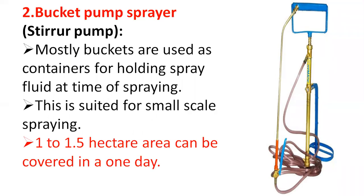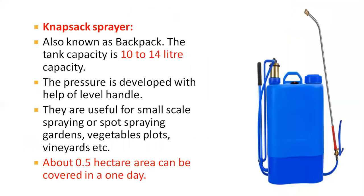Next is the bucket pump sprayer, also called the stirrup pump. This pump is generally used with a bucket container for holding the spray fluid during spraying. The lance is placed inside the container and holds the spray fluid. The bucket is filled with chemical solution and this sprayer is suited for small-scale spraying. About 1 to 1.5 hectares of area can be covered per day.